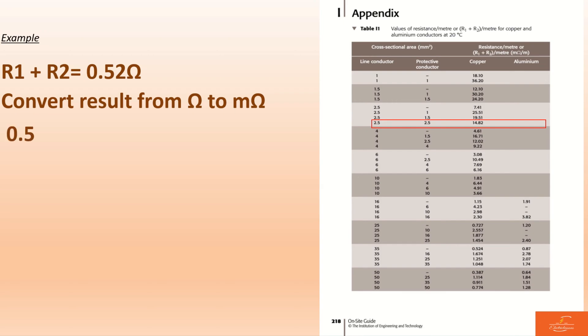If you need to convert your reading to milliohms, this is what you need to do: 0.52, just as it is in this case, multiplied by 1000. Whatever your value is, as long as you need to convert it to milliohms, you just multiply by 1000. In this case we'll have 520 milliohms, and that is our value.